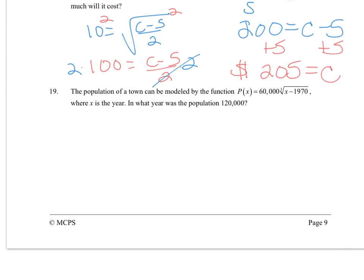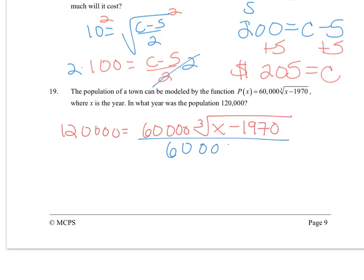For 19, in what year was the population 120,000? So population, and this question you can use a calculator for your arithmetic if you like, so we're going to divide by 60,000, so that is 2.